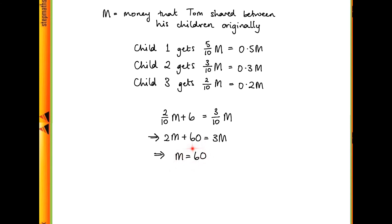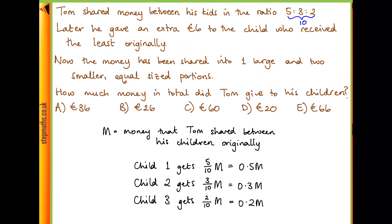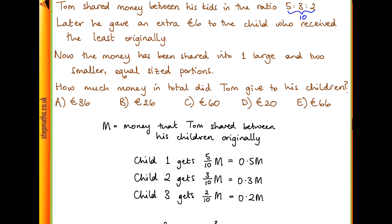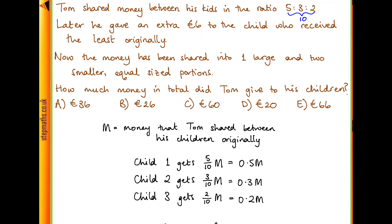So we've worked out M, but we don't have our answer yet, because remember M was the amount of money that Tom shared originally. When I was doing this question for the first time, I forgot about this — but remember, Tom gave out an extra 6 euros. So the total money that Tom gave to his children would be this M, the 60 euros, plus this extra 6 euros. So that's 66 in total, and the answer is E.